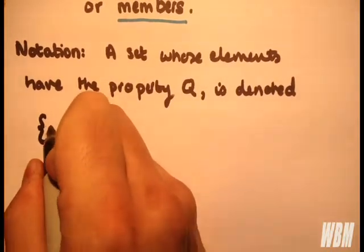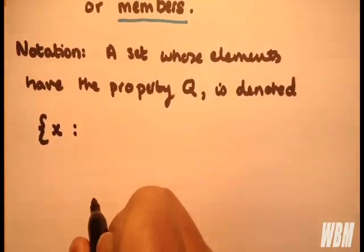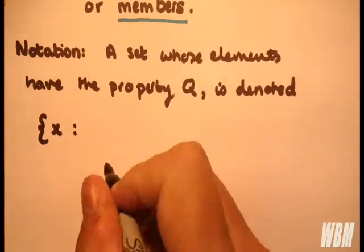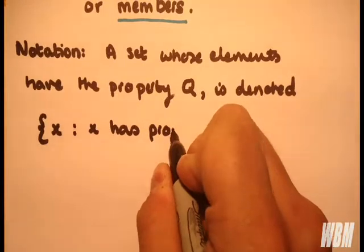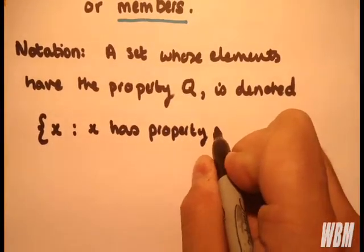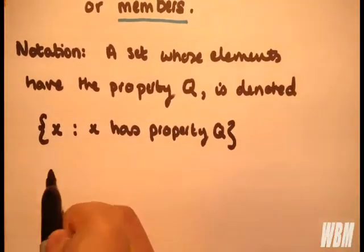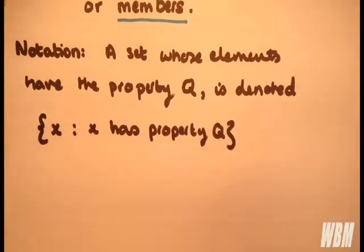Is denoted in the following way: curly brackets, X, colon or such that. So we have a set X such that X has the property Q.